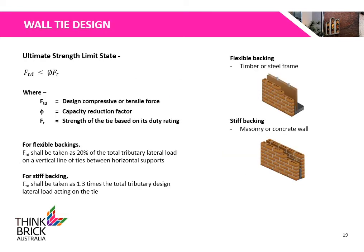The ultimate strength limit state of the wall ties is shown in the equation, where FTD is the design compressive or tensile force, phi is the capacity reduction factor, and FT is the strength of the tie based on its duty rating. A flexible backing is defined as a timber or steel frame, and the design compressive or tensile force shall be taken as 20% of the total tributary lateral load on a vertical line of ties between horizontal supports. A stiff backing is defined as a masonry wall or concrete wall, and the design force shall be taken as 1.3 times the total tributary design lateral load acting on the tie.